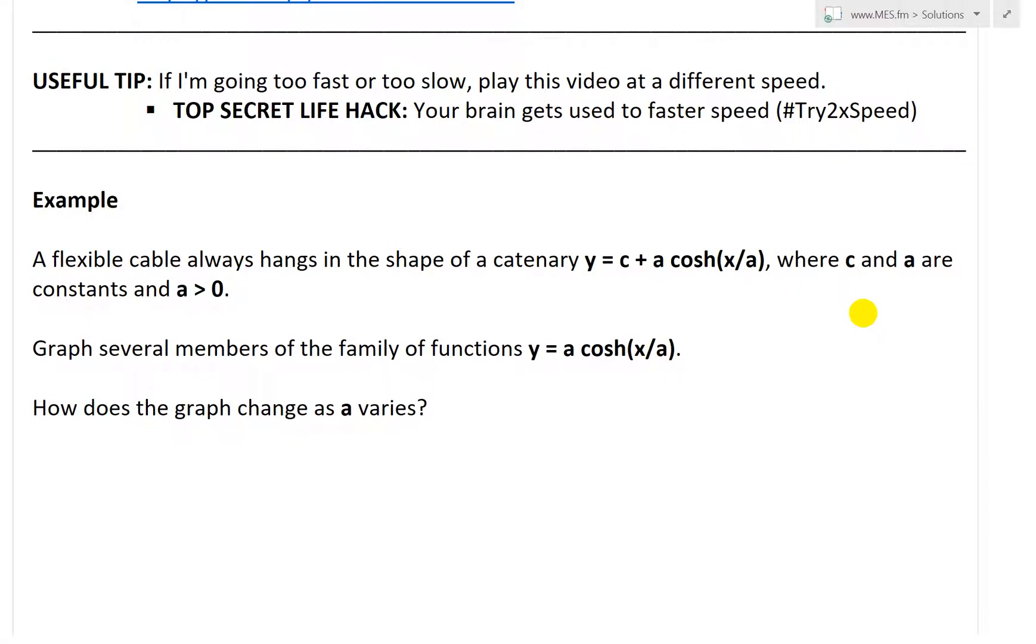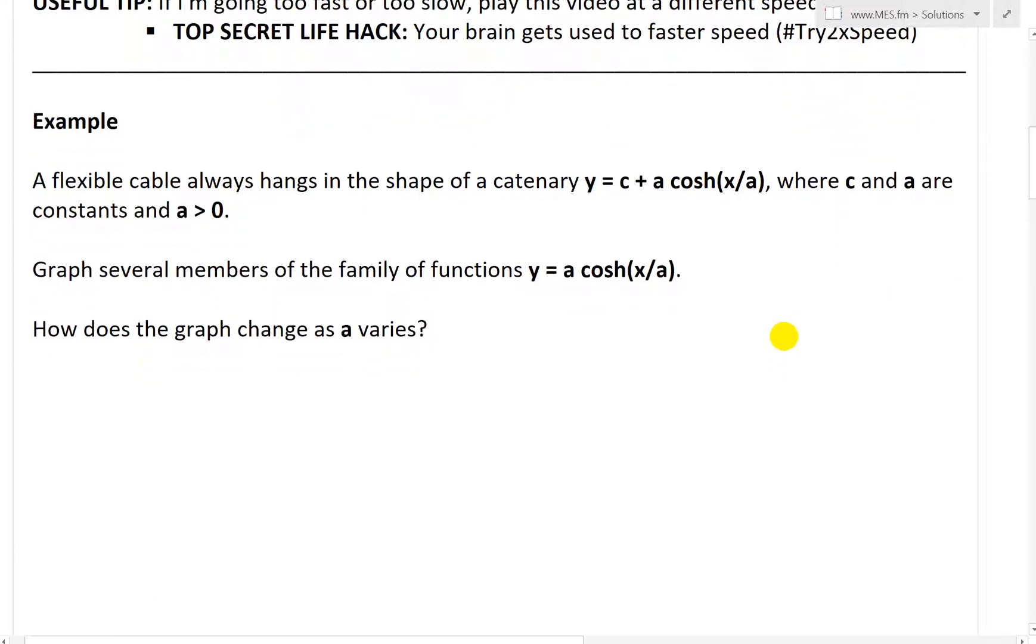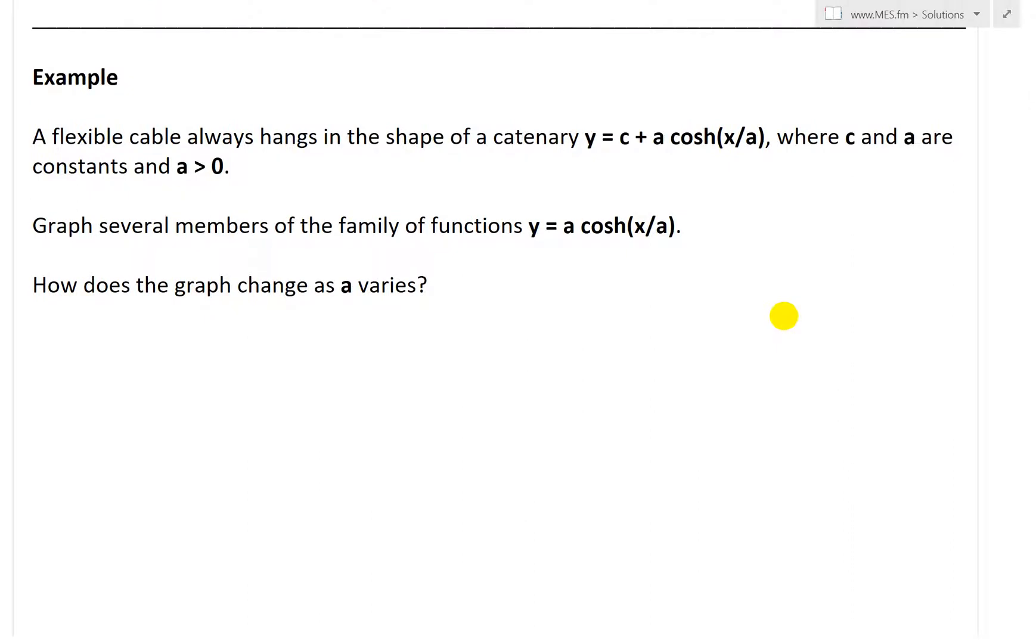It states, here's the example. A flexible cable always hangs in the shape of a catenary y equals c plus a cosh(x/a), where cosh is again hyperbolic cosine, where c and a are constants, and a is greater than 0. Now it says,